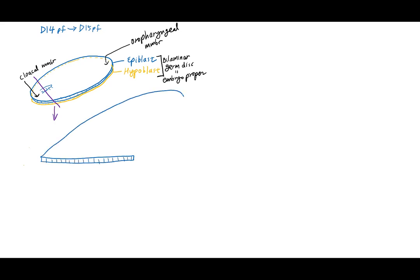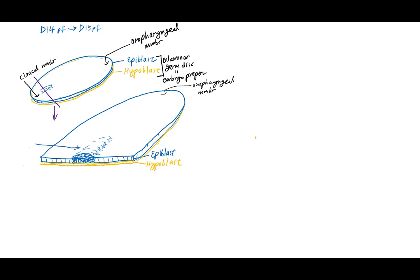On a cross section, here's the epiblast cell layer with the oropharyngeal membrane way up ahead, and just underneath, the hypoblast cell layer. This raised ridge appearing around day 15 is due to a higher rate of mitosis within the epiblast cells. The increased cell population in this area results in cellular crowding, causing this elevated ridge to appear. This elevated ridge of epiblast is called the primitive streak.